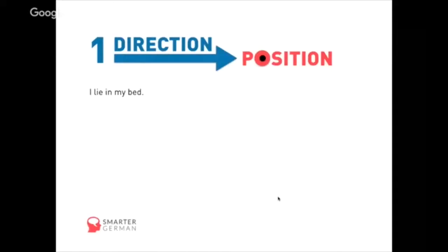The sentence 'I lie in my bed' — if you imagine someone lying in bed, is that a directional movement or something static, a static position? Of course it's a position: no one is moving. Once you're in bed, you should lie there and sleep. Next example: 'I put my glasses onto the table.' If you put something somewhere, it's obviously a movement, and every movement has a direction. So it's a direction.